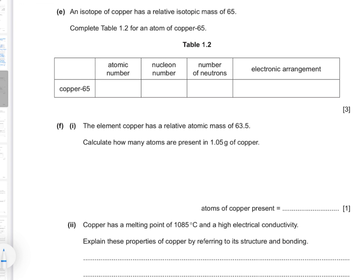Part e: An isotope of copper has a relative isotopic mass of 65. Complete Table 1.2 for an atom of copper-65. The atomic number of copper is 29, meaning that is the number of protons and electrons in a neutral atom. The nucleon number equals the mass number, and the number of neutrons equals the mass number minus the atomic number, which for copper-65 is 65 − 29 = 36.